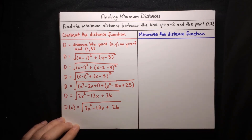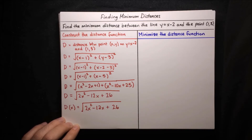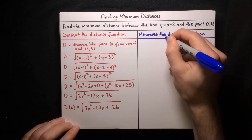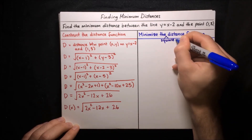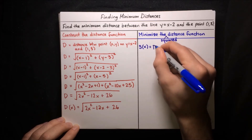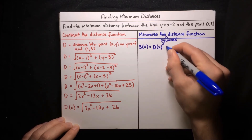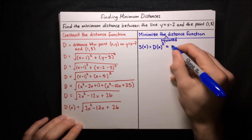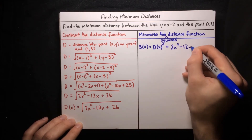Now we want to minimize the distance function. We could take the derivative and set it equal to zero, but the square root makes that complicated. Thankfully, minimizing the square of the distance function always gives the same result as minimizing the distance function itself. So instead we'll minimize the squared distance function s(x), defined as d(x) squared, which equals just everything inside the square root: 2x squared minus 12x plus 26.